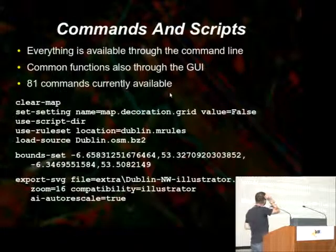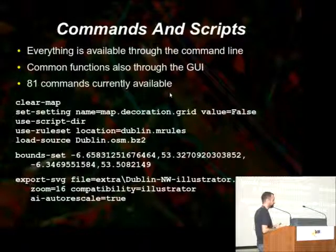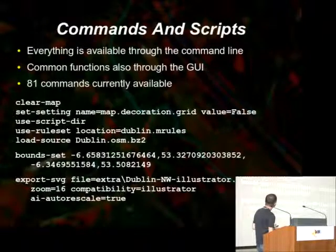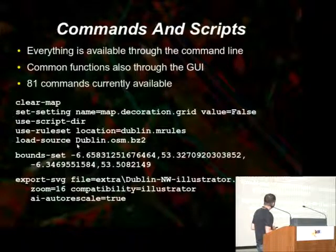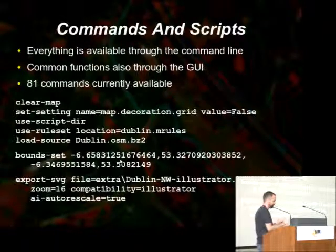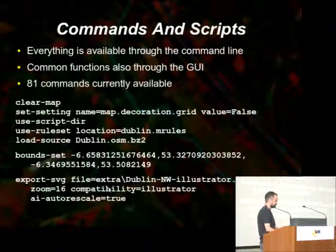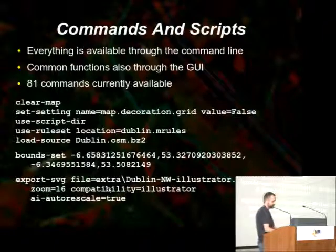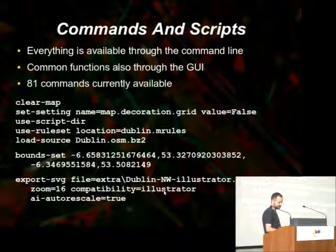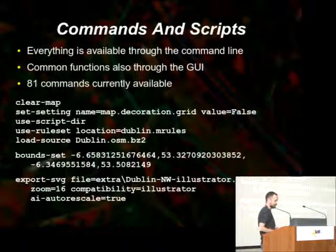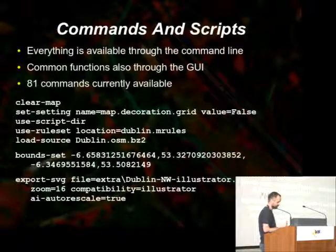As I already mentioned, everything is available through the command line. Common functions are available through the GUI. Here you have a sample Maparity script. It clears the map, hides the grid, loads certain rules for rendering, then loads the OSM data for Dublin, sets the boundaries for exporting to a bounding box, and exports the SVG for zoom level 16 using Illustrator compatibility mode. Writing a script is not really difficult — once you see the commands executed when you run a menu item, because everything run through the menu is also shown as a command in the command log, so you can just copy-paste it into your own file and run it.